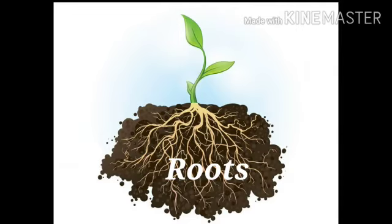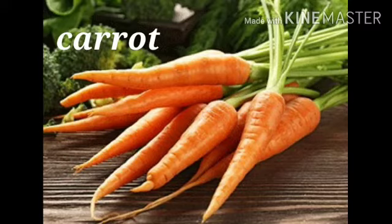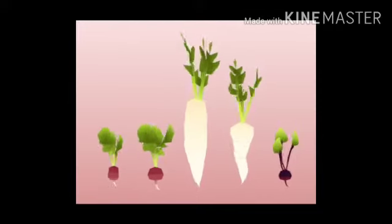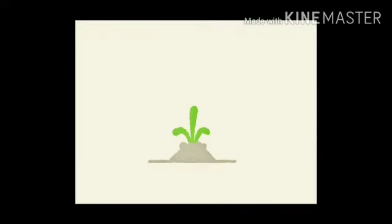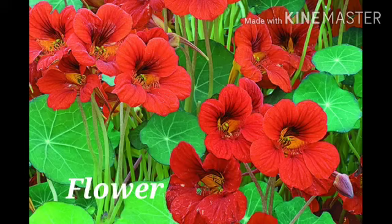Moving on to the root part of the plant that we eat — these are radish, carrot, and beetroot. Yes dear children, all these vegetables grow underground.